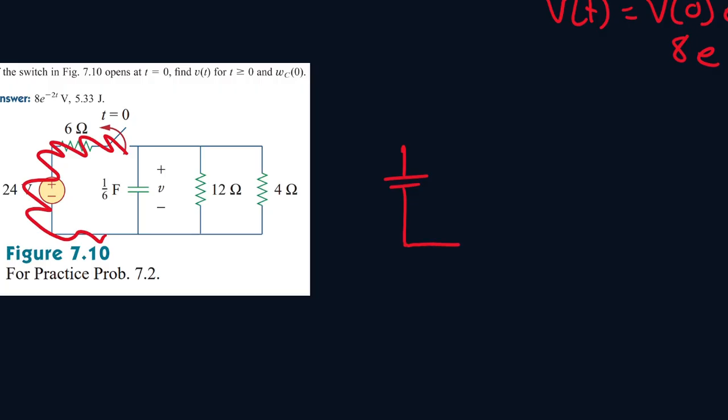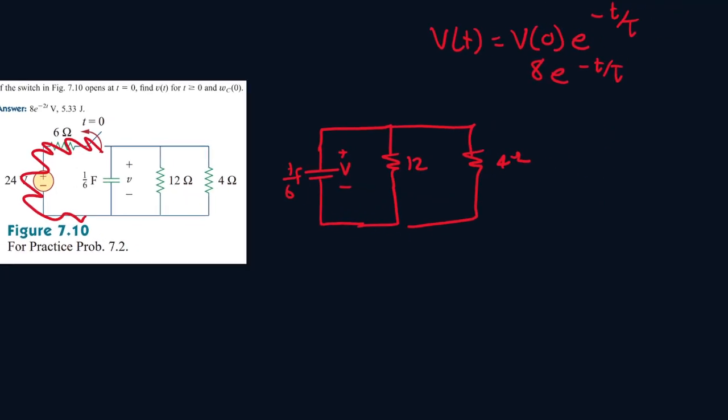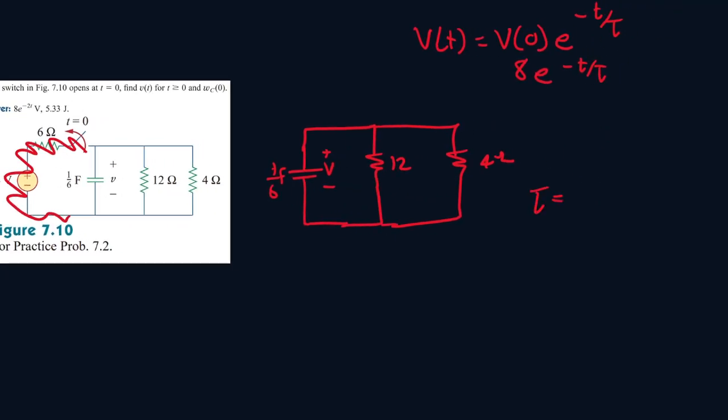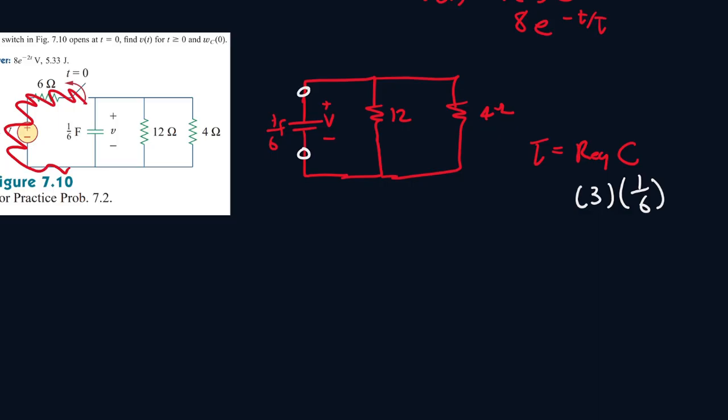So it will be like this. So this is 12 ohms, this is 4 ohms, then v plus minus, then 1 over 6 volts. Now, to find the time constant, it's equal to the resistance equivalent times the capacitance value. So the resistance equivalent between the capacitor terminals, it will be 1 over 4 plus 1 over 12 to the power of minus 1. So it will be 3 times the capacitor, so 1 over 6. And that gives me 1 over 2. That's my time constant.